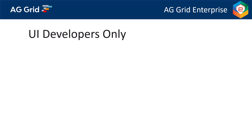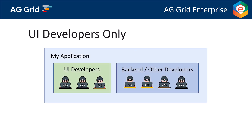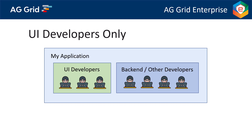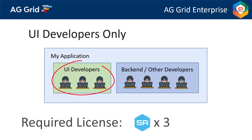You might be wondering: do you need to cover all JavaScript developers on a project? You need to cover all front-end JavaScript developers — that is, all JavaScript developers doing front-end work only. If you have developers who are not touching the front-end, for example back-end developers or developers writing test scripts, they do not need to be licensed if they are not touching the front-end JavaScript code. In the example here, we have seven developers of which only three need to be licensed for AG Grid, as the others are back-end developers who do not touch the front-end code.